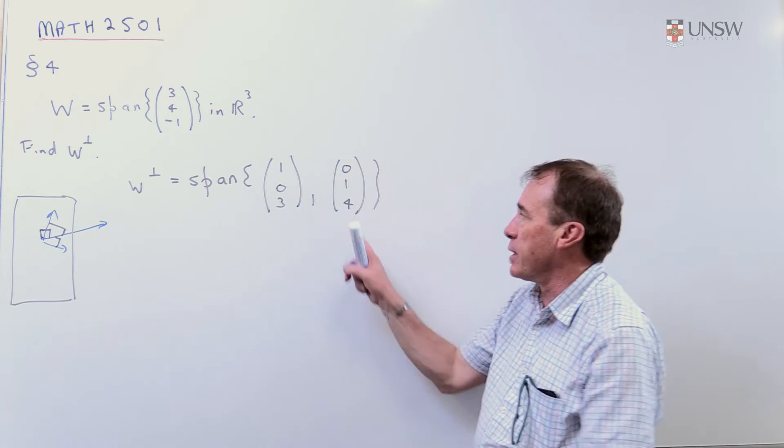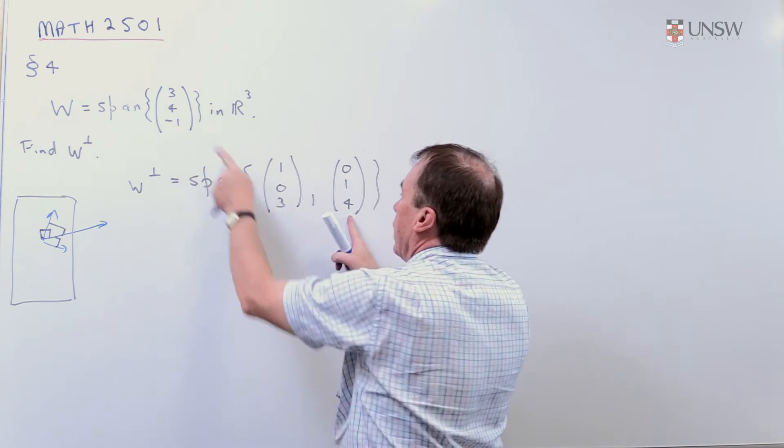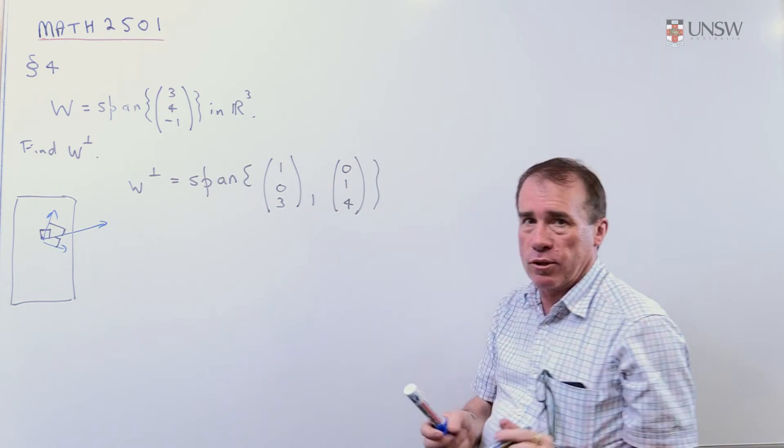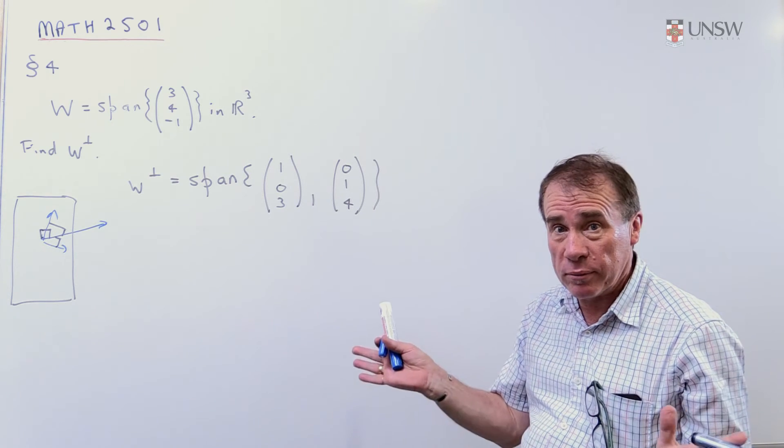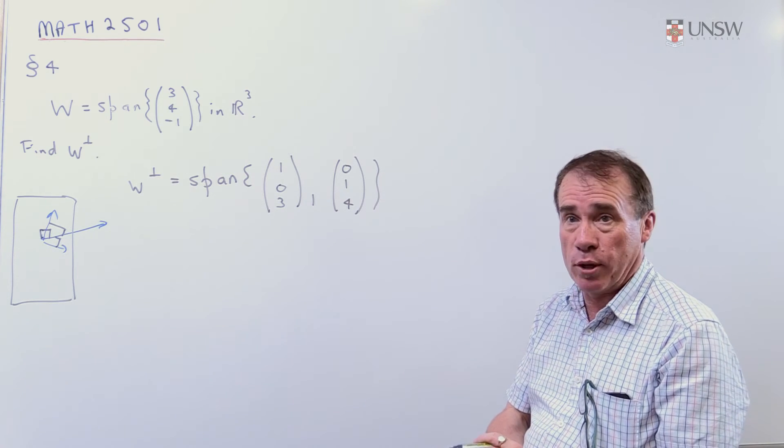That's obviously dot product zero with this vector. And these are obviously independent because you can't make one from the other by multiplying it. That'll do. That's the end of the problem. That's the perpendicular space.